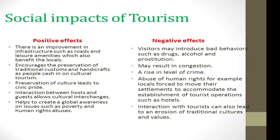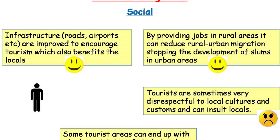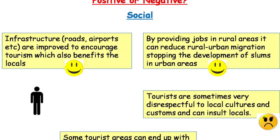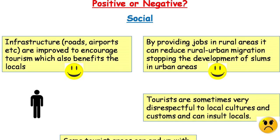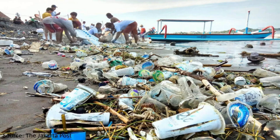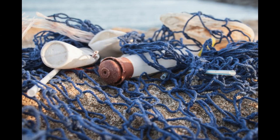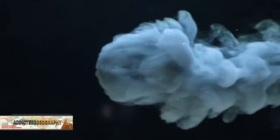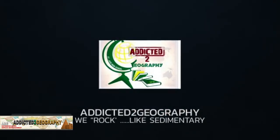So those are some of the problems: the strain on infrastructure, the illicit drug industry, environmental problems, crime, and the demonstration effect. I hope you've learned a lot from this video. It's primarily based on a question I gave my class. If you have any questions, leave them in the comments and I'll reply or create a new video based on your question. Until the next video on Addicted to Geography — peace.